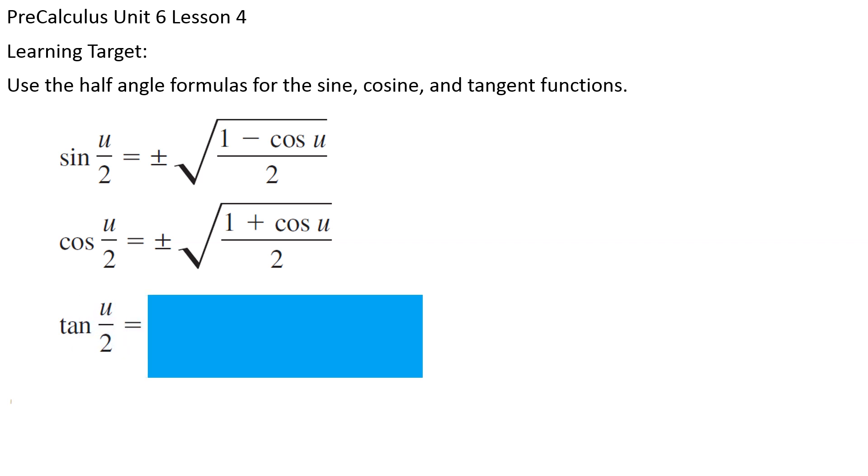Tangent of u over 2? Two choices. 1 minus cosine u over sine of u, or, if I prefer, sine of u over 1 plus cosine of u.